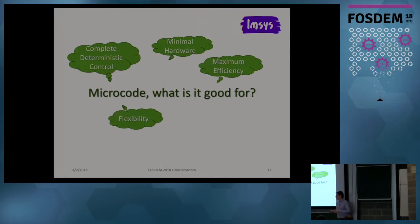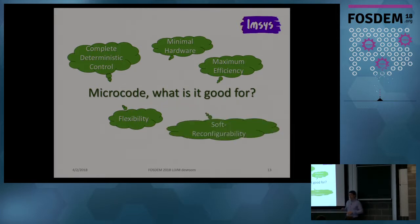Microcode also means flexibility. We can implement any kind of computation in microcode, which makes our processor core a multipurpose device. We can develop a general purpose instruction set architecture, but we can also microcode special digital signal processing features like FFT or encryption. And since microcode is stored in a special memory in our processor, we can overwrite the microcode and reconfigure the device dynamically — an important feature for the future.